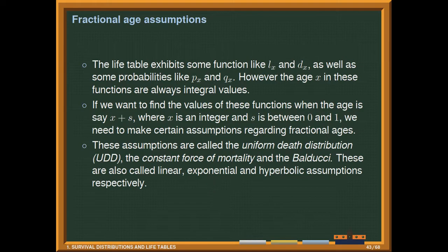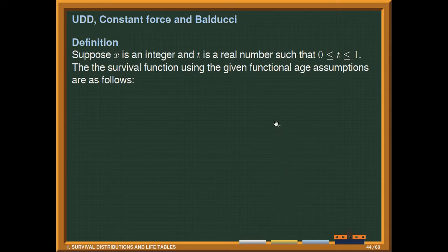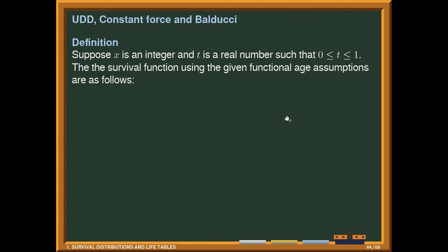We will consider three fractional age assumptions: the uniform death distribution, which we call the UDD; the constant force of mortality; and the Balducci hypothesis. These are also respectively called the linear assumption, the exponential assumption, and the hyperbolic assumption. Suppose x is an integer and t is a real number with 0 ≤ t ≤ 1. The survival functions for these three assumptions are as follows.